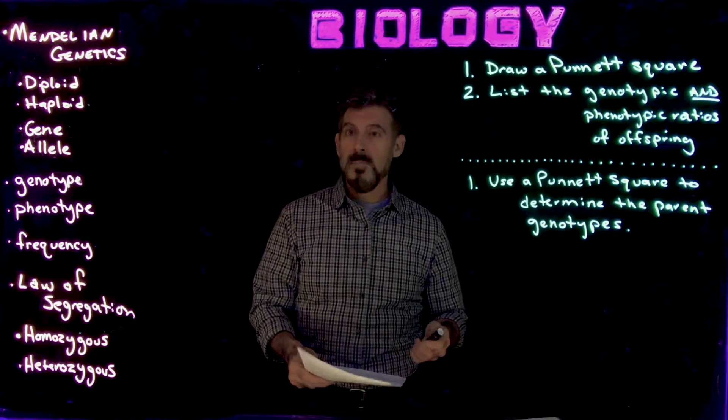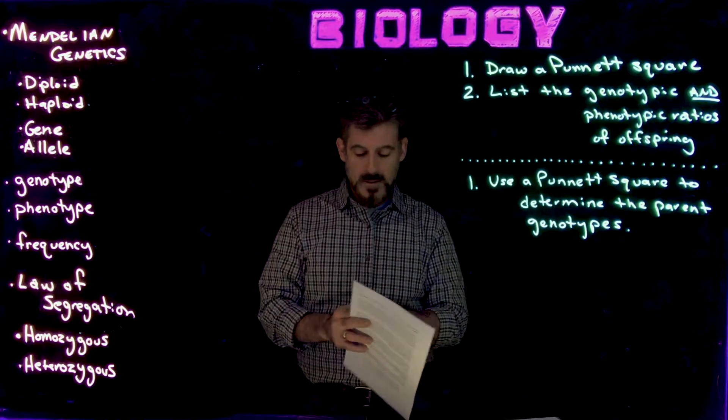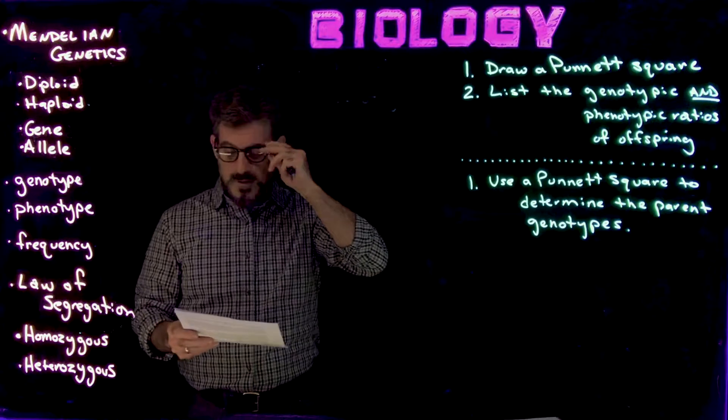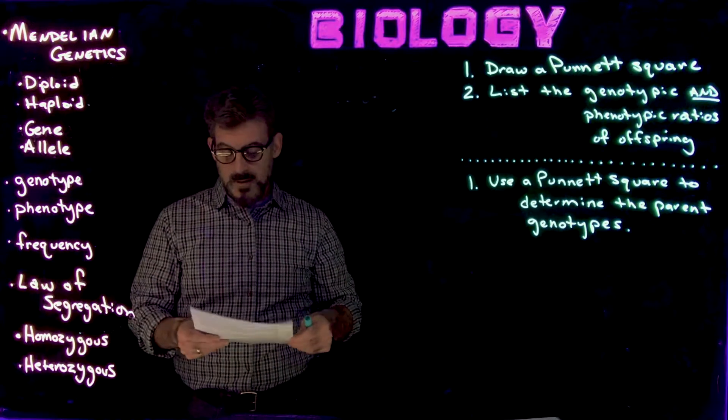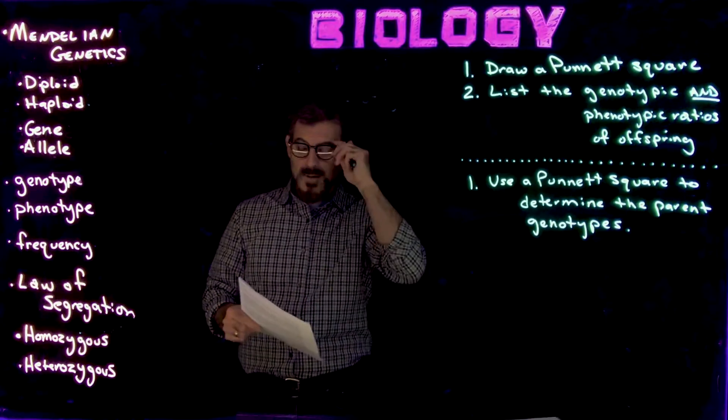Alright, so I'm going to kind of read an example, and this is what we're going to do here. So in this first example, we have cats that have long hair and short hair, and long hair is recessive to short hair.